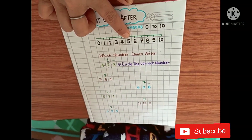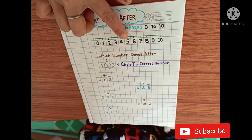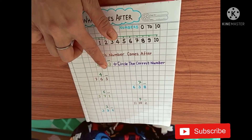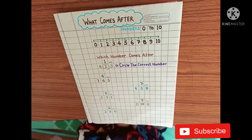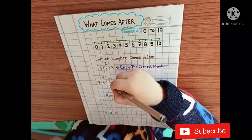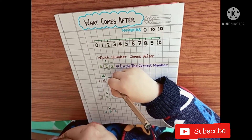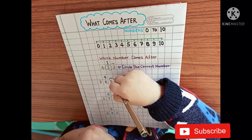What comes after 4? 5. Can you make a circle on the right number? 5. Yes.